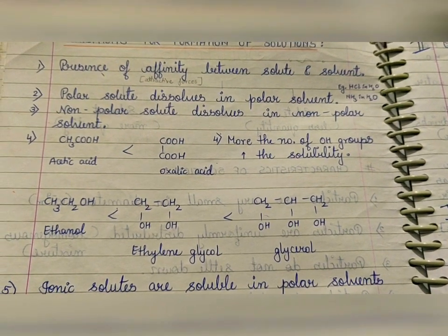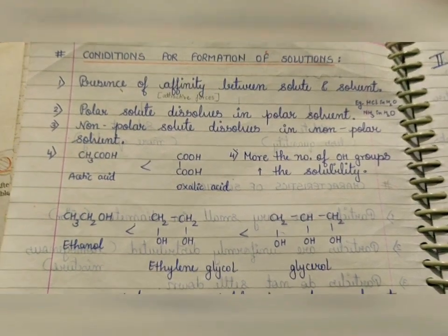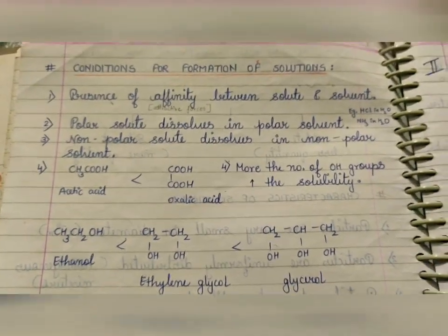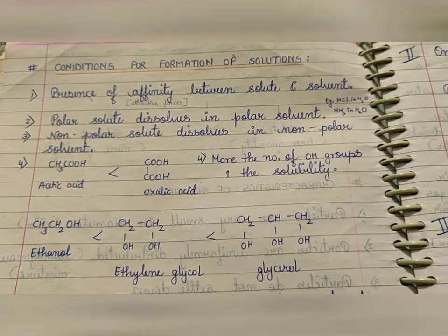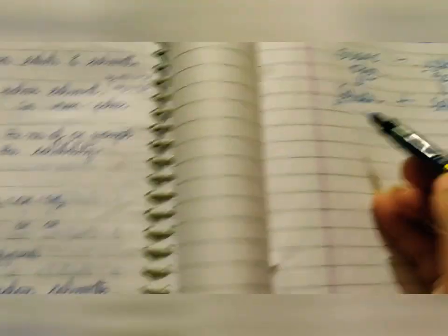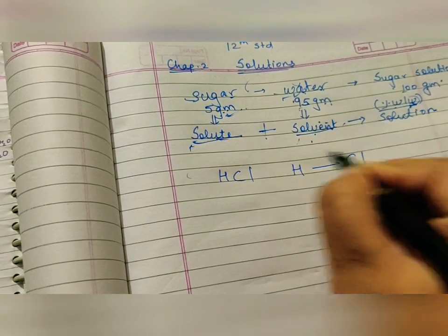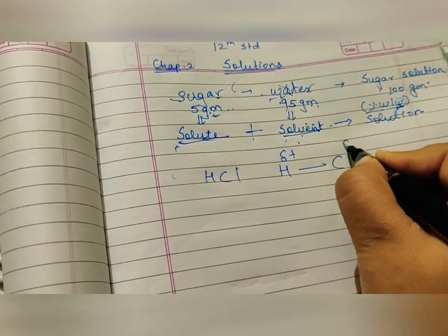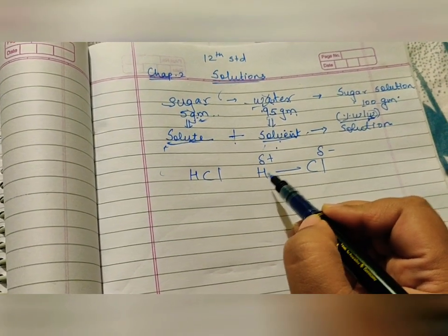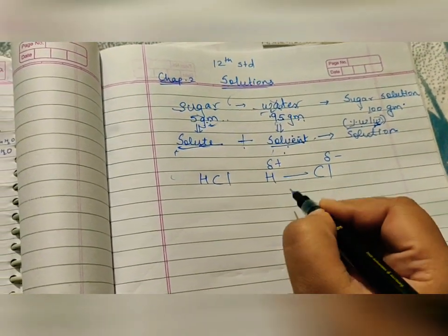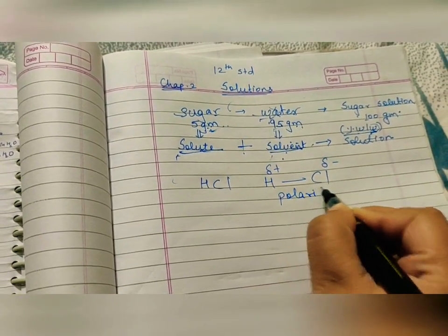What is polarity? That we have already studied in 11th — it is the dispersal of partial positive and partial negative charges. Take for example HCl and H₂O. HCl is polar: hydrogen carries partial positive charge and chlorine carries partial negative charge because chlorine is electronegative. This dispersion of partial charges is the concept of polarity.